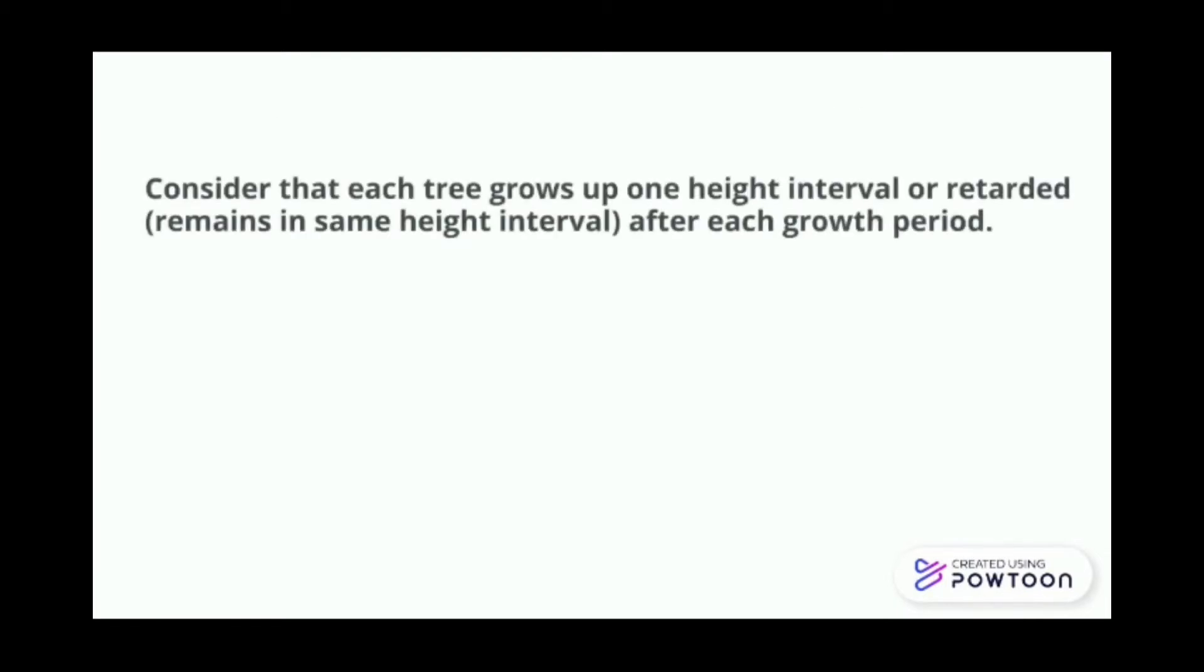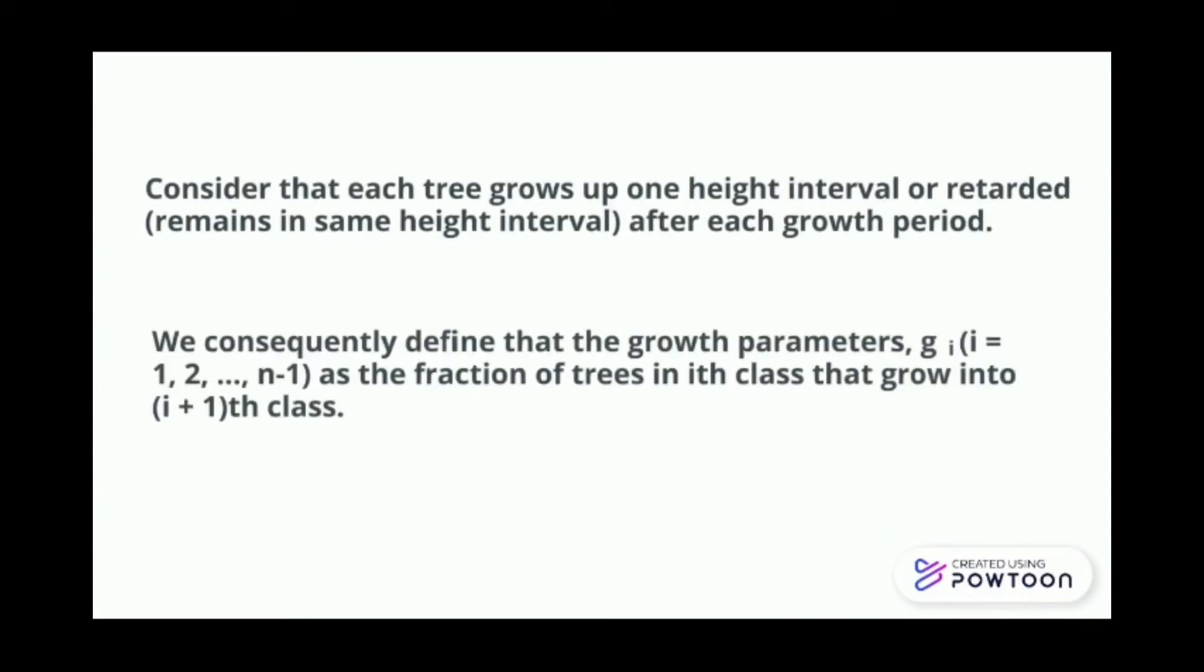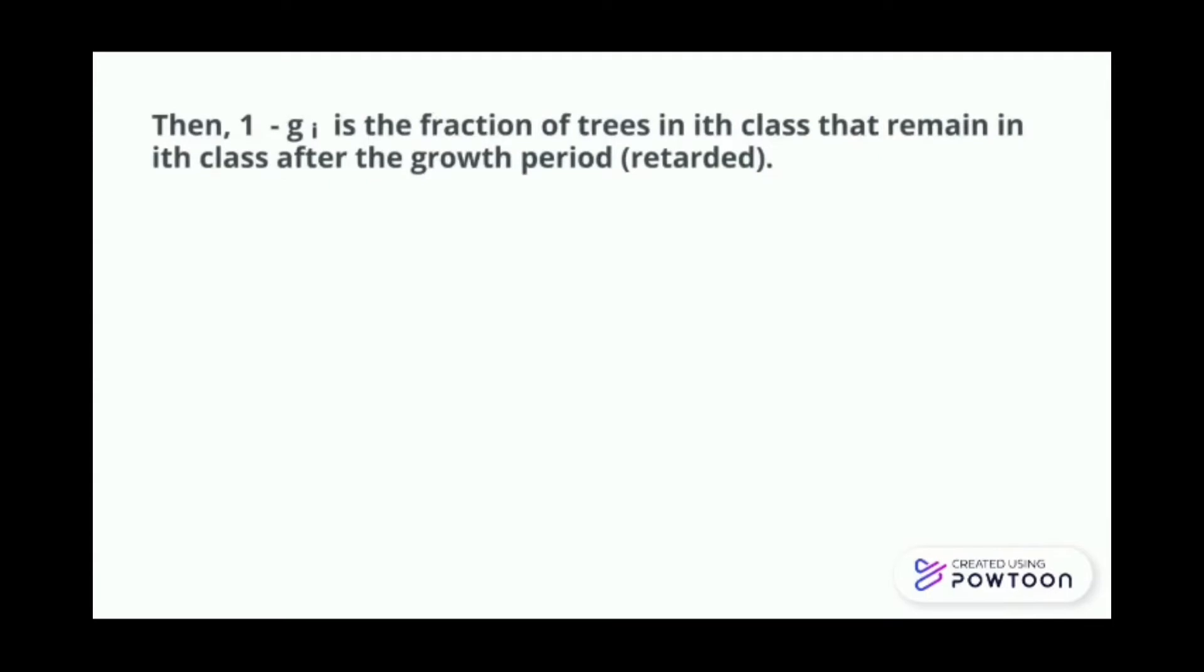Consider that each tree grows up one height interval or retarded, remains in same height interval, after each growth period. We consequently define the growth parameters, gi, i from 1, 2, until n minus 1, as the fraction of tree in i class that grow into i plus 1 class. Then, 1 minus gi is the fraction of trees in i class that remain in i class after the growth, as in they are retarded.